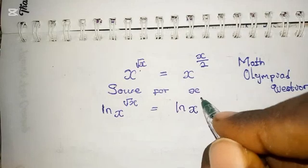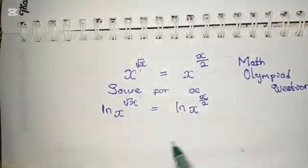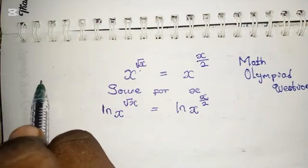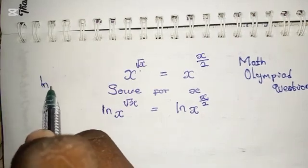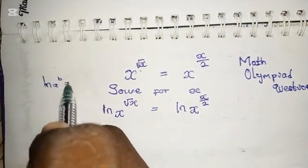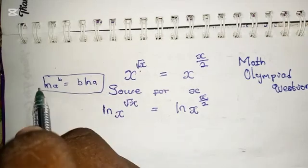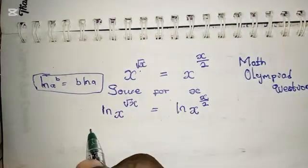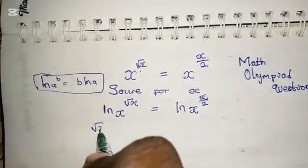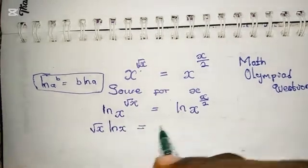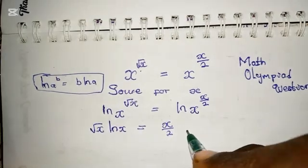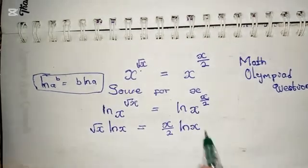Now recalling this property that when you have the natural log of A to the power of B, it's equal to B times the natural log of A. So using this property, we can say that √x times ln(x) is equal to x/2 times ln(x).